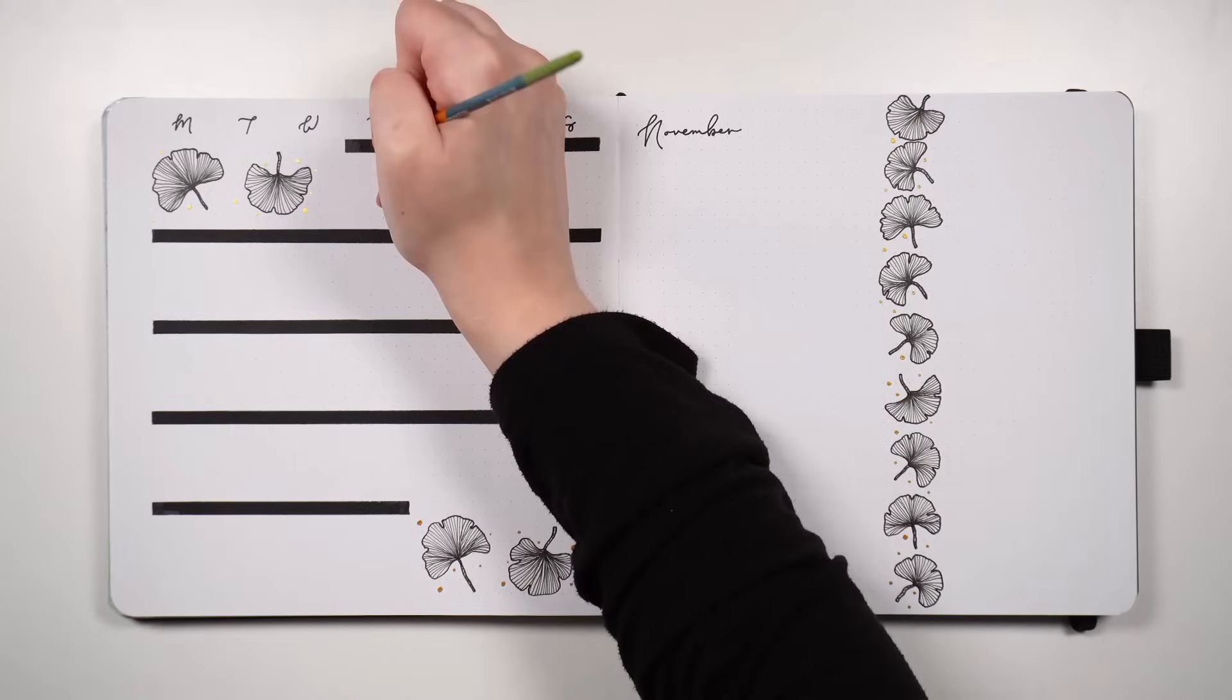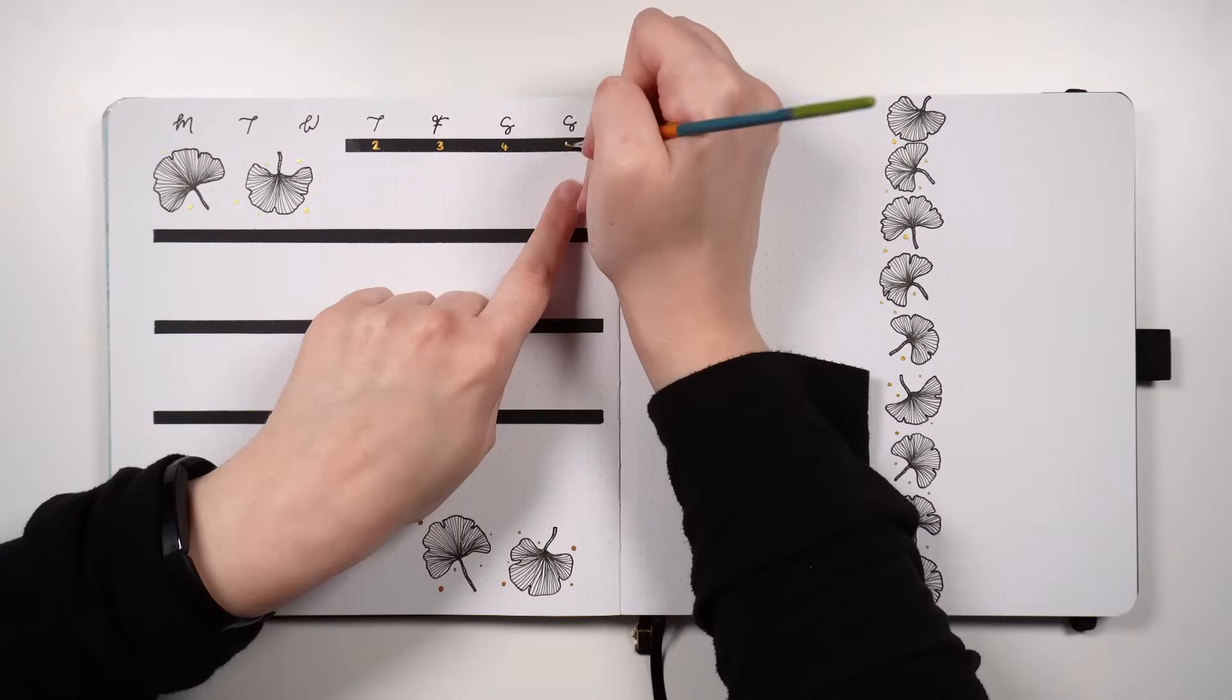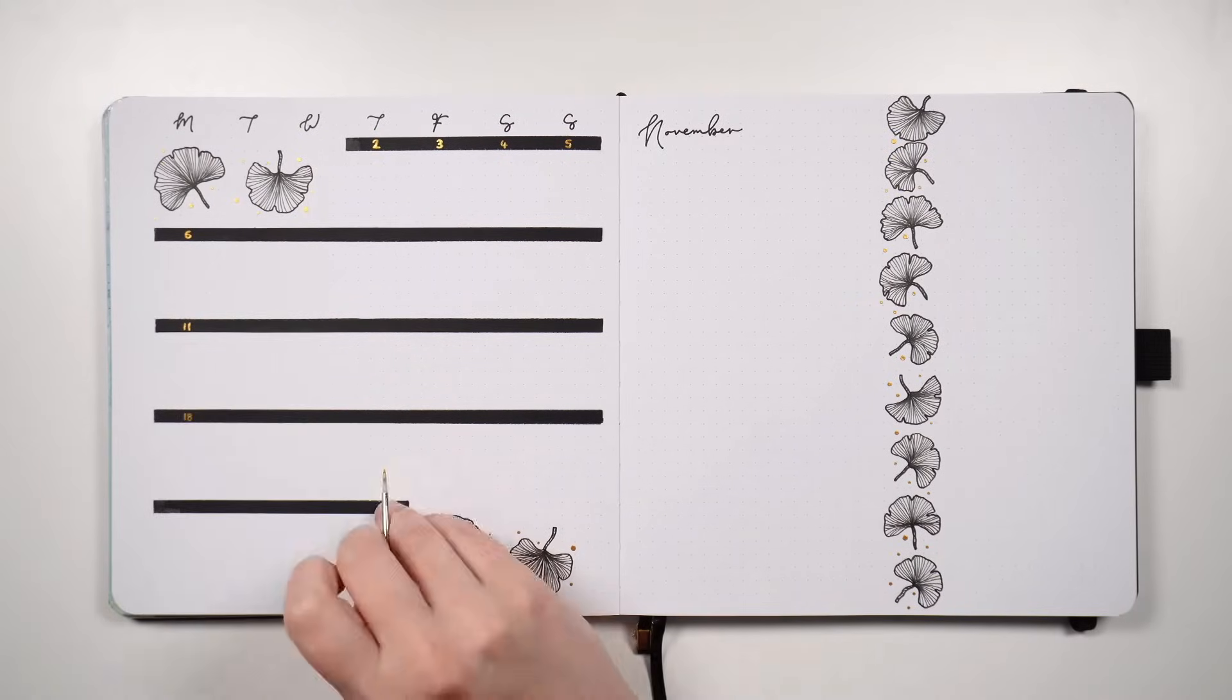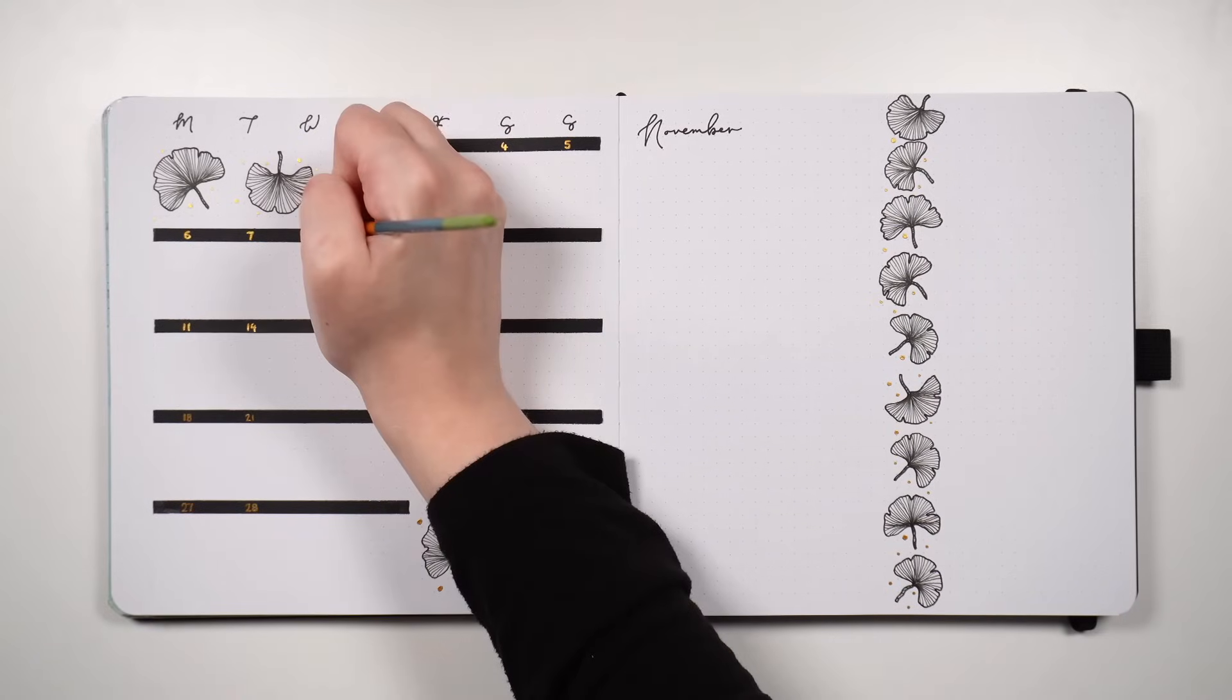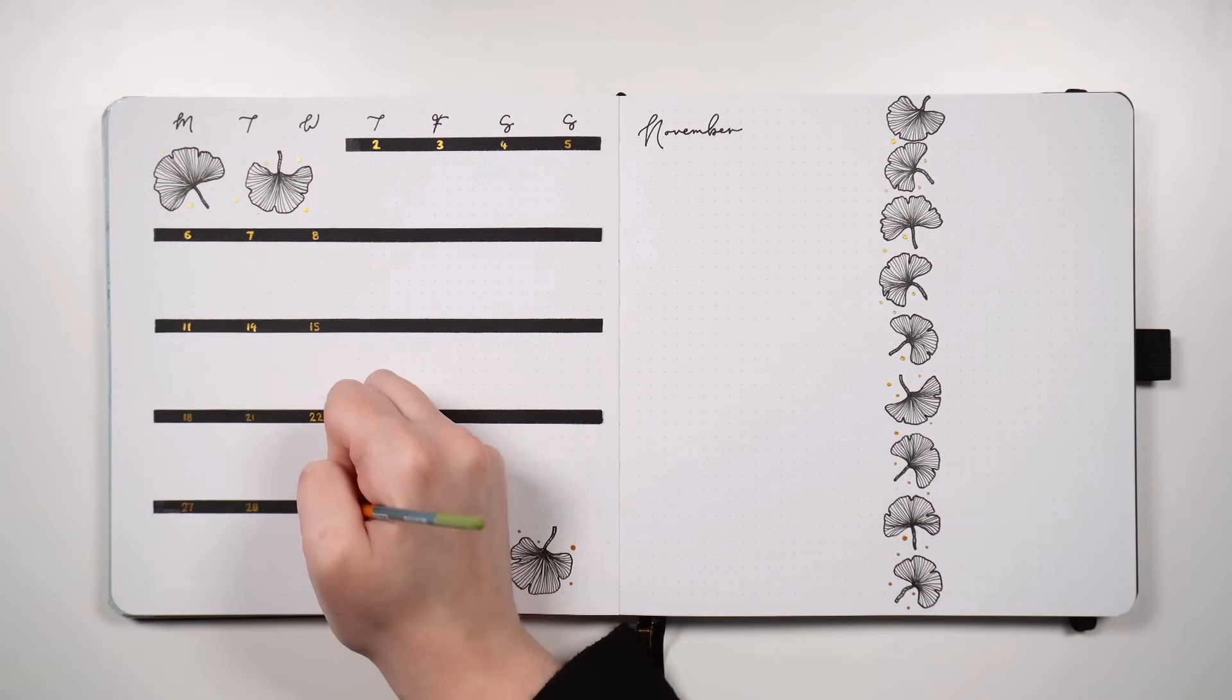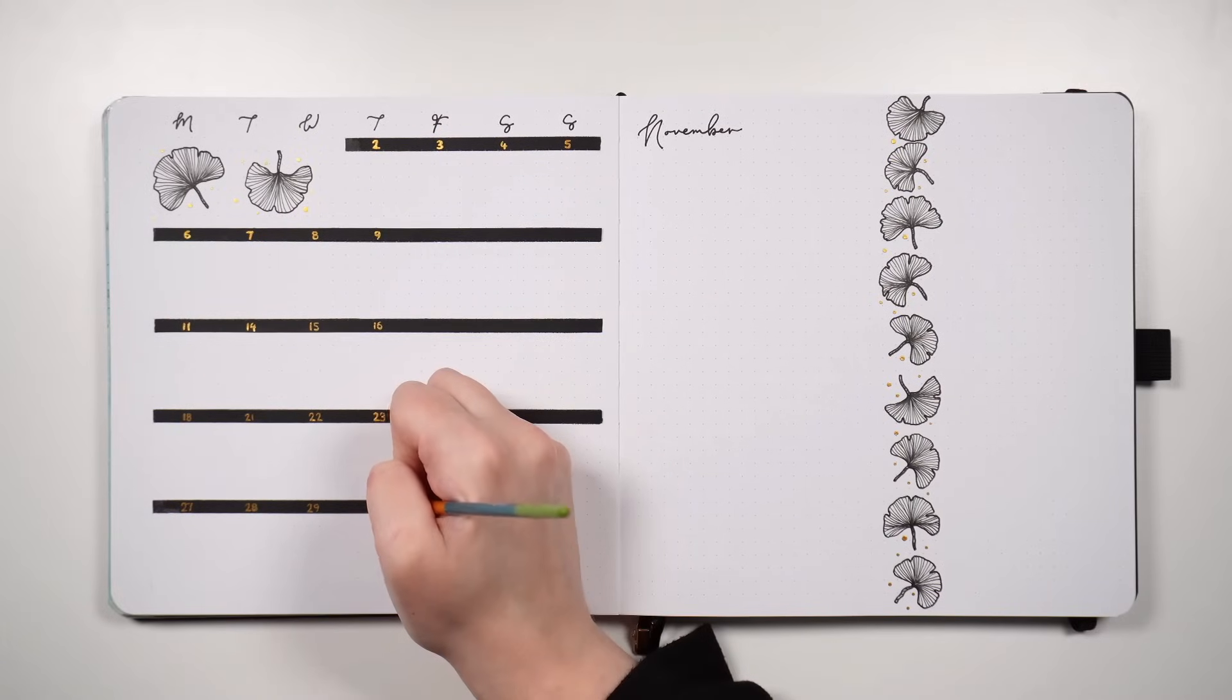But thankfully we covered that over with the paper, so it wasn't the worst thing in the world. But then of course, when I started to number the calendar again, I forgot that I don't have the first day of the month on here. So I stuffed up again and wrote the number one in, which I could turn into a two, so it wasn't the end of the world. But then when I went to number the subsequent days, my maths was off and I'm like, oh yeah, six plus seven is eleven, that sounds about right. Spoilers, no, that should be thirteen.